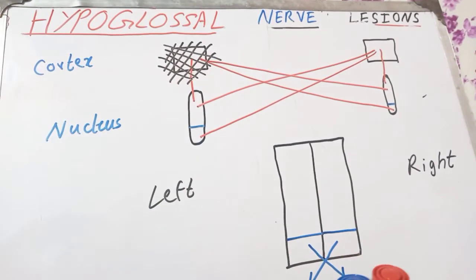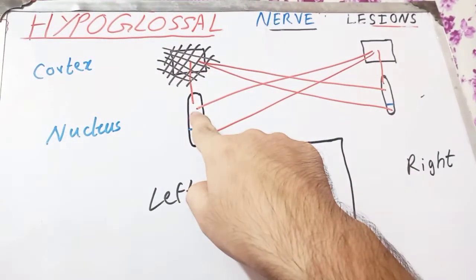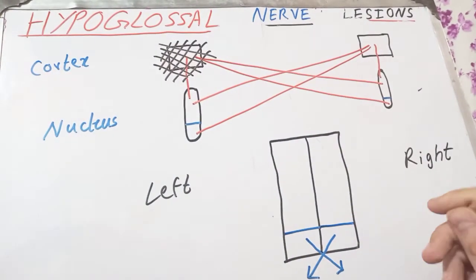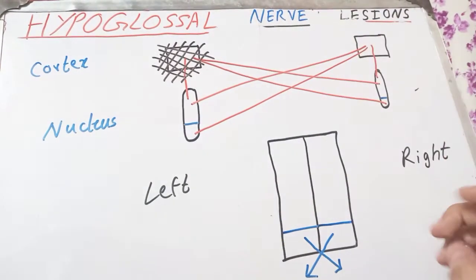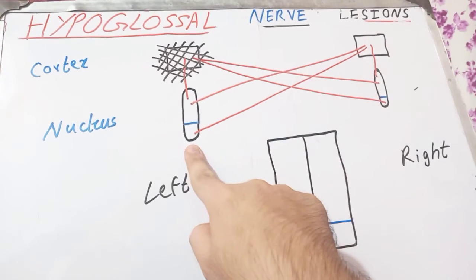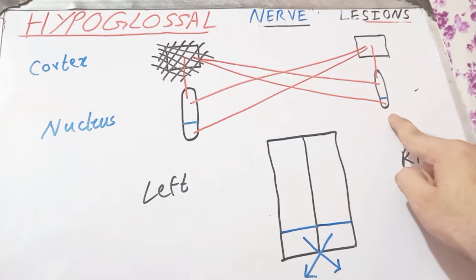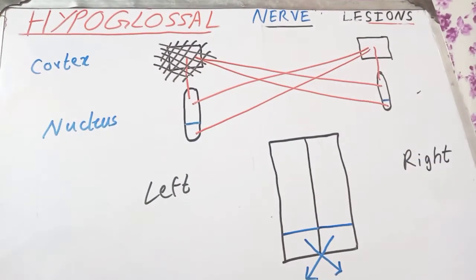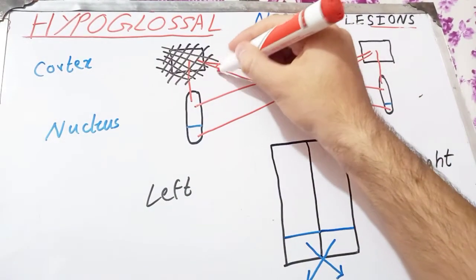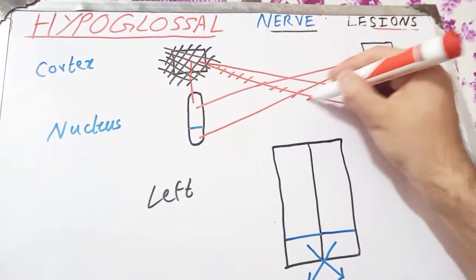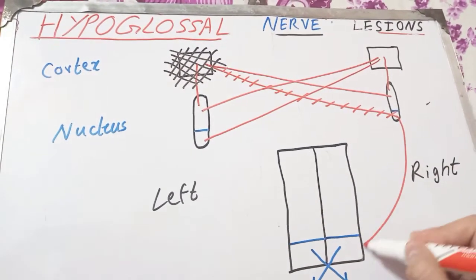If there is a lesion of the left-sided nucleus, all fibers emerging from it will be paralyzed. The upper portion of both nuclei receive innervation from both cerebral cortices, so they will not be denervated. But the genioglossus muscle receives fibers only from the opposite side, so it will degenerate. The fibers coming to the opposite-sided genioglossus muscle are now paralyzed.